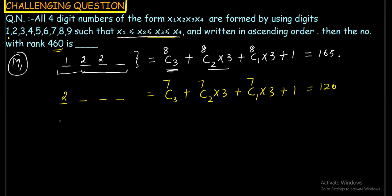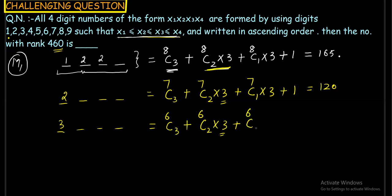Numbers starting with 3: the remaining usable digits are 6 (digits 4–9). Using the same pattern: 6C3 + 6C2 × 3 + 6C1 × 3 + 1, which calculates to 84.